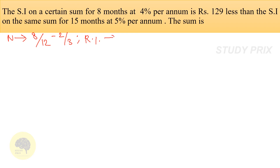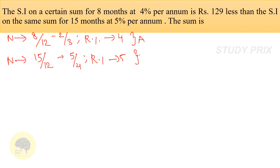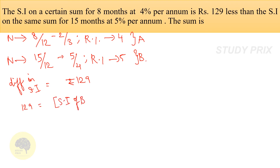Case B — time = 15 months = 15/12 = 5/4 years, rate = 5%. The question states the difference in simple interest is Rs.129. Therefore: 129 = SI of B minus SI of A, because A paid Rs.129 less than B. So we subtract SI of A from SI of B.